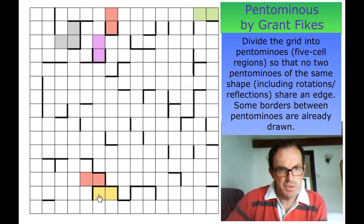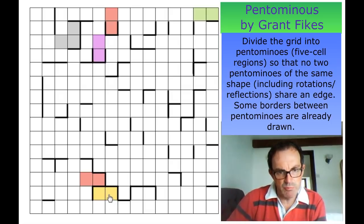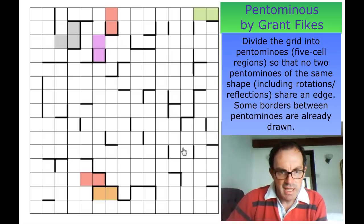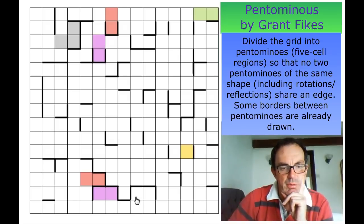Let's try this trick again: if these two cells are in the same region, what does that region have to look like? That is interesting — if these are part of the same region, how can we draw a pentomino in here that is not a P pentomino?